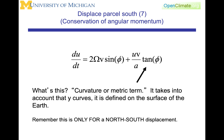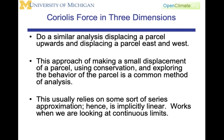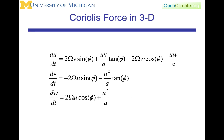You should remember that what we have done here is only for a displacement in the north-south direction. If we were to repeat this with a displacement in the east-west direction, we can follow the derivation in the Holton and Hakeem textbook using conservation and some series approximations. This is an explicitly linear derivation. If we do this similar analysis in three dimensions, we can get a representation of what we might call a combination of the Coriolis term and the curvature or metric terms in three dimensions.